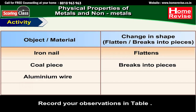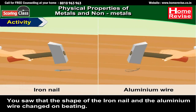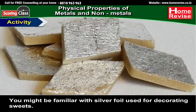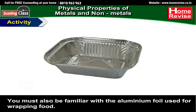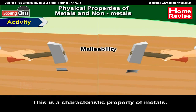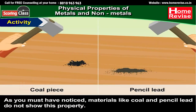An aluminum wire when hammered flattens into a sheet, while the pencil lead when hammered breaks into pieces. The shape of the iron nail and the aluminum wire changed on beating — if beaten harder, they could have changed into sheets. You might be familiar with silver foil used for decorating sweets, and aluminum foil used for wrapping food. The property of metals by which they can be beaten into thin sheets is called malleability — this is a characteristic property of metals. Materials like coal and pencil lead do not show this property.